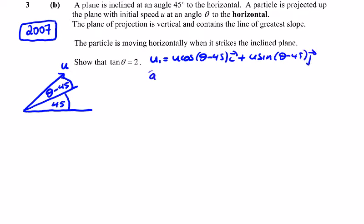The accelerations are minus g over root 2 for both components, because sin and cos of 45 are the same — so minus g over root 2 in each direction.